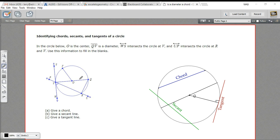In this problem, we just need to identify some of these things. So looking at this picture below, the first part says give a chord. So a chord could be this diameter from V to Q. It could be this segment here from V to R, or this segment here from Q to R. All of those are chords.